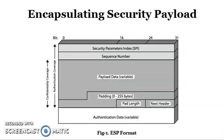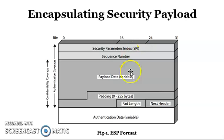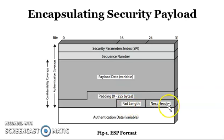The ESP format spans 0 to 24 bits. It has a confidentiality cover and an authentication cover. The authentication cover is provided by the outer block and the confidentiality cover by the middle block. The fields include: security parameter index, sequence number, payload data which is variable in length, padding bits from 0 to 255, padding length, next header, and authentication data at the end.